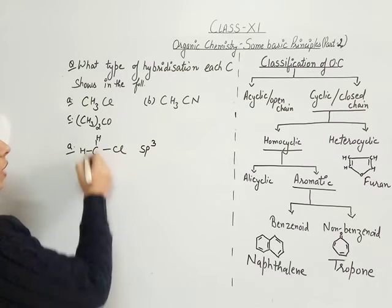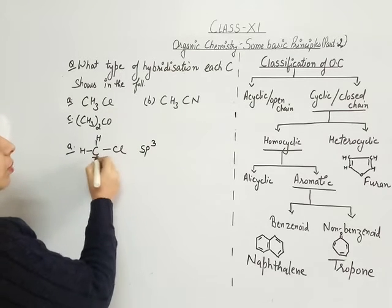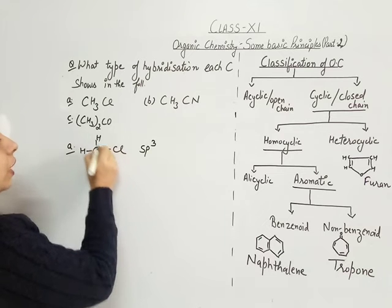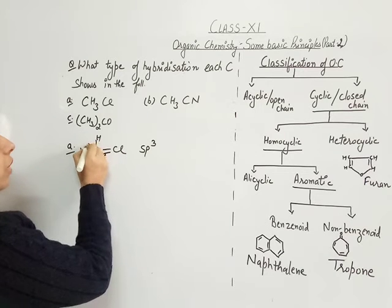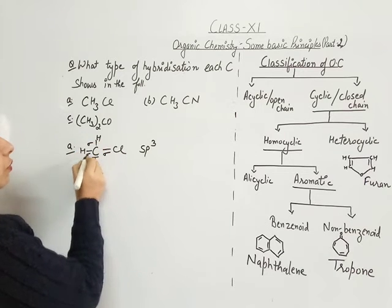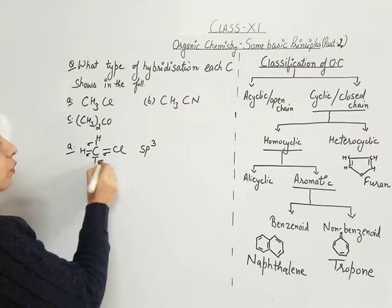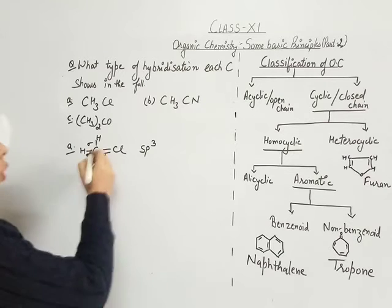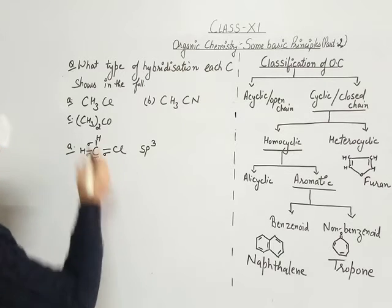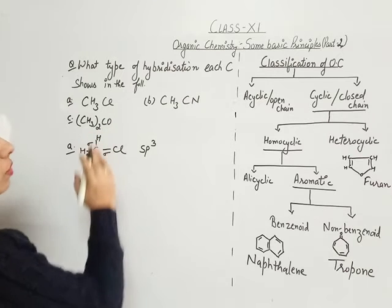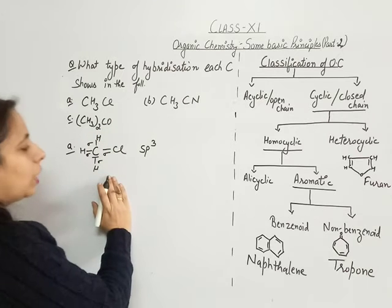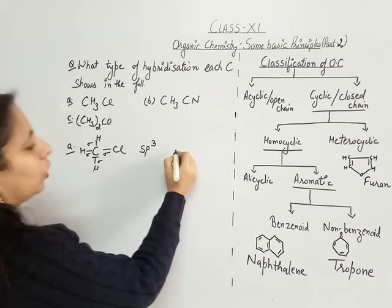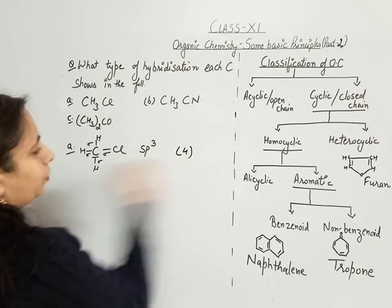All the bonds formed by carbon with the other atoms are single bonds. We know that single bonds are always sigma bonds — a single bond is formed by head-on overlap. So all will be sigma bonds. The total number of sigma bonds in this molecule is 4.